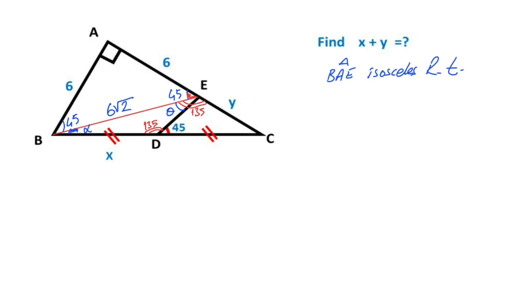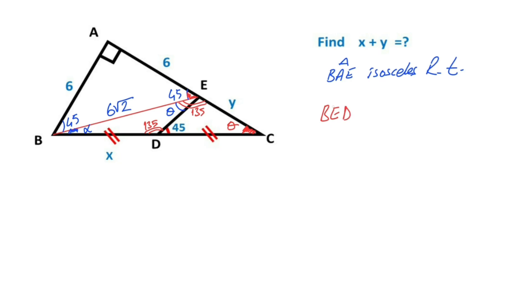If we focus on triangle BED, we have alpha, theta, and 135 degrees. Now let's focus on triangle BEC. We have alpha and 135 degrees, which means this remaining angle must also equal theta.